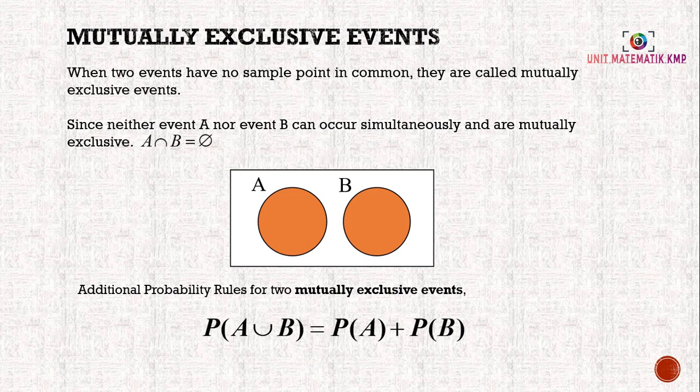Mutually exclusive events. When two events have no sample points in common, they are called mutually exclusive events. Since neither event A nor event B can occur simultaneously and are mutually exclusive, we can say that A ∩ B = 0.